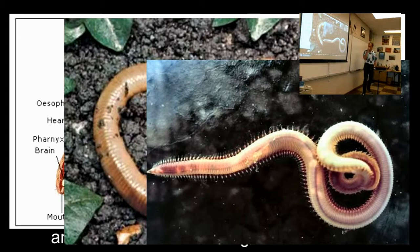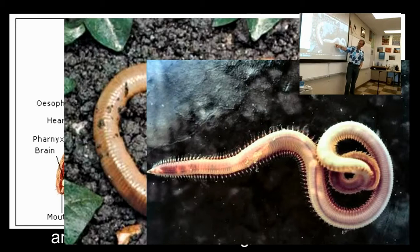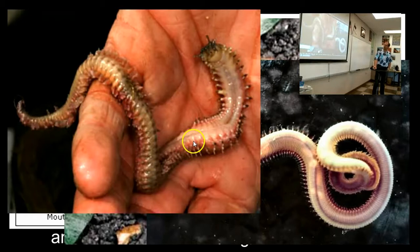Some annelids have setae that become rather large and pronounced. This is an annelid where the setae get to be kind of big — at first you might think it looks like a millipede, but it's a worm. These are just their setae that are big and look sort of like legs. Some worms have very, very pronounced setae where it totally looks like legs, but it's not a centipede — that's a worm with big setae.